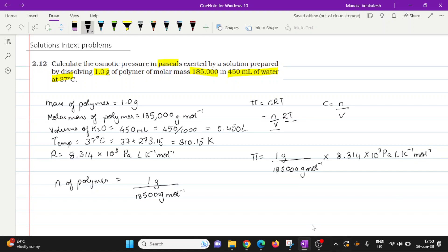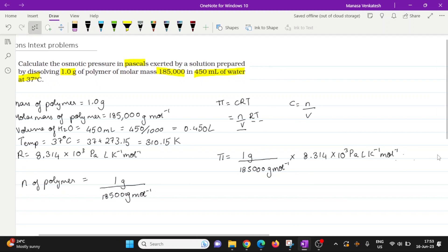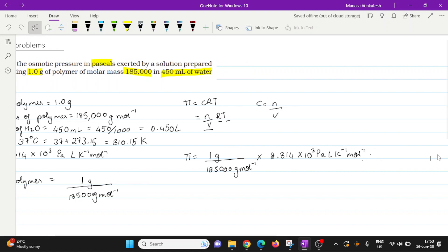Okay, so into R is 8.314 times 10 to the power 3 pascal liters per kelvin per mole. Let me scroll a little bit to that side, and then into temperature, that is 310.15 kelvin.